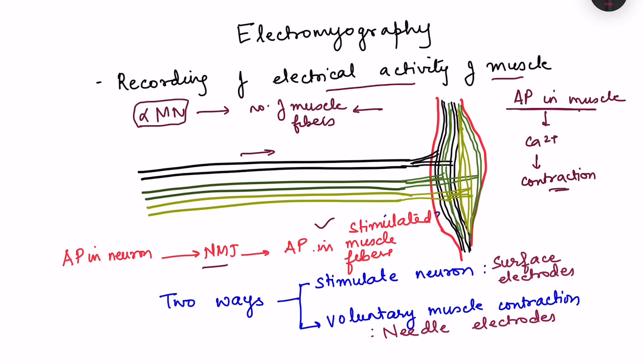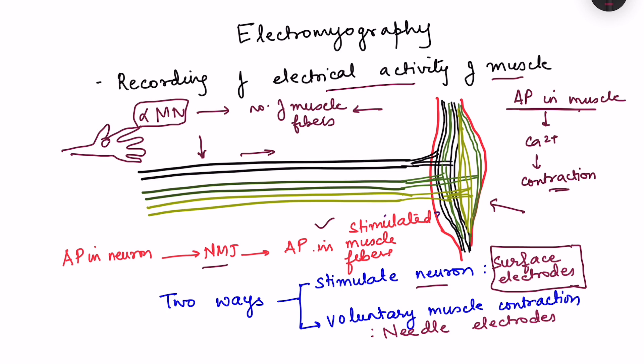There are two ways to record the electrical activity of muscle. One way is to stimulate the neuron directly — we place electrodes on the neuron and stimulate it so that the action potential reaches the muscle, with all action potentials arriving at the same time. We do this by placing surface electrodes on the muscle. For example, if recording from the median nerve on the hand, we place round surface electrodes on the area supplied by that particular nerve.